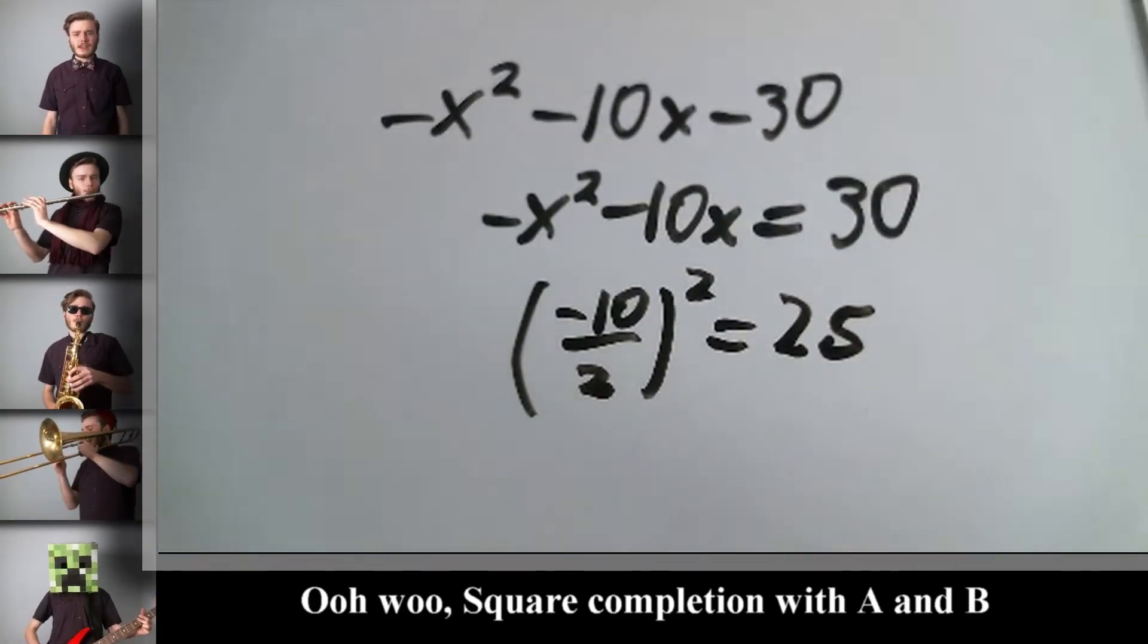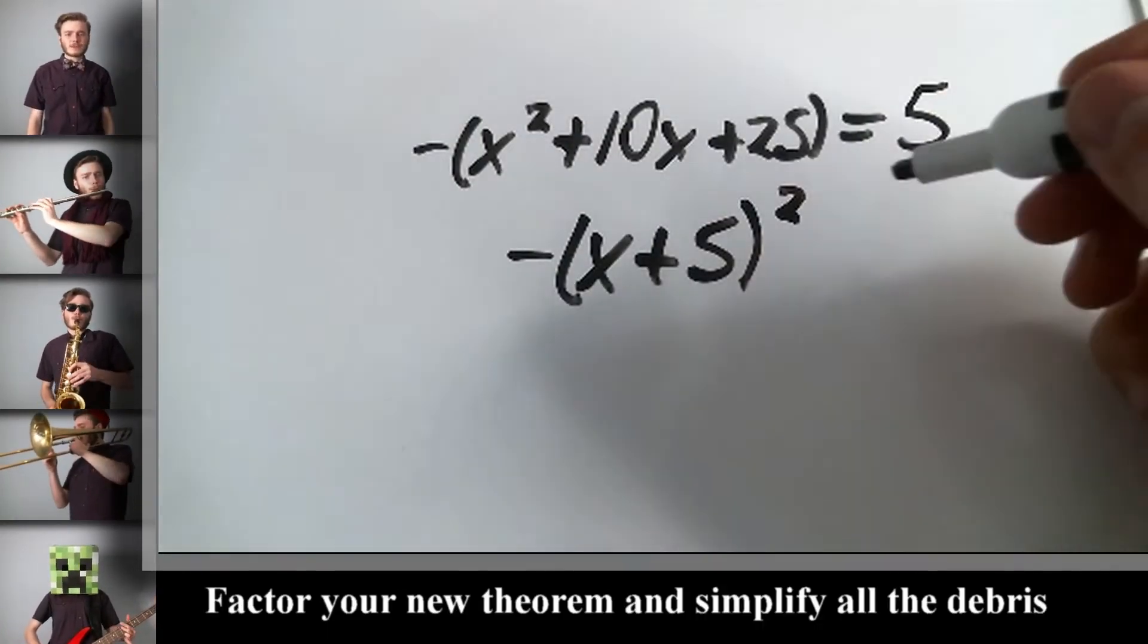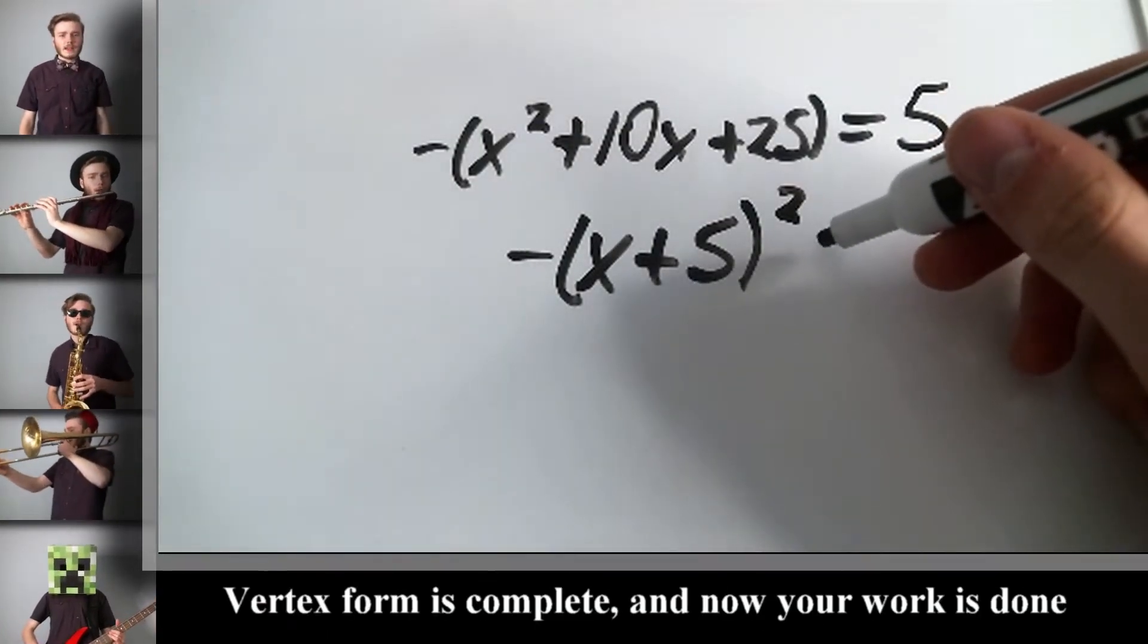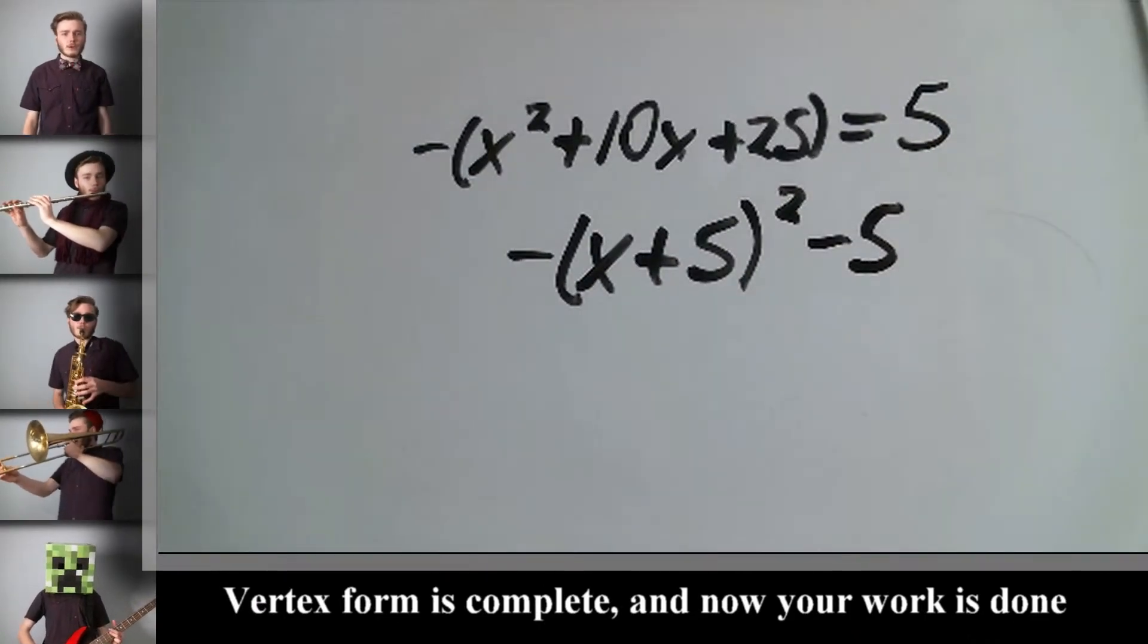Spread completion with A and B. Factor your new theorem. Simplify all the debris. The vertex form is complete and now your work is done.